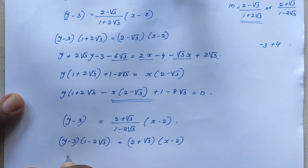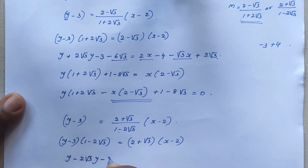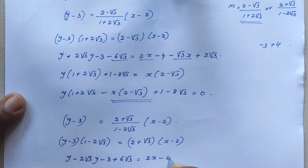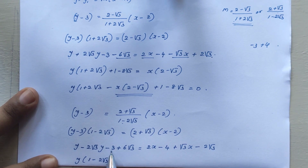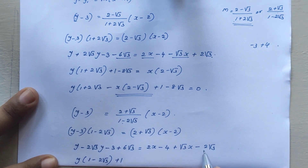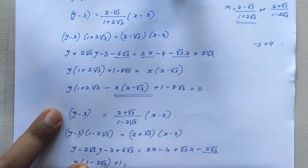Expanding the bracket: y - 2√3*y - 3 + 6√3 = 2x - 4 + √3*x - 2√3. Rearranging: (1 - 2√3)*y = 2x - 4 + √3*x - 2√3 + 3 - 6√3, giving the second equation of the line.